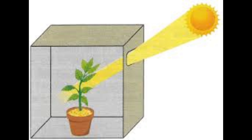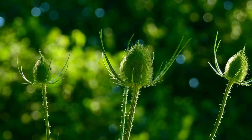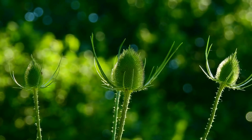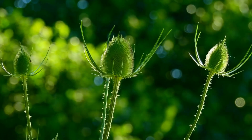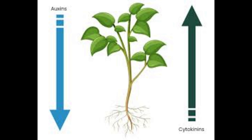Geotropism, also known as gravitropism: response to gravity. Roots grow downwards — positive geotropism — while stems grow upwards — negative geotropism.